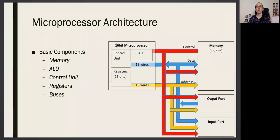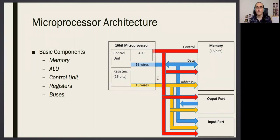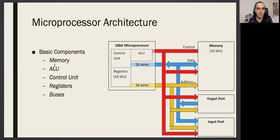We are talking about microprocessor architecture. What is a microprocessor architecture? If we are talking about a general microprocessor architecture, then every microprocessor in the world has a similar architecture. Every microprocessor has these basic components: memory, the arithmetic logic unit, the control unit, registers, and buses — the little cables that connect them.